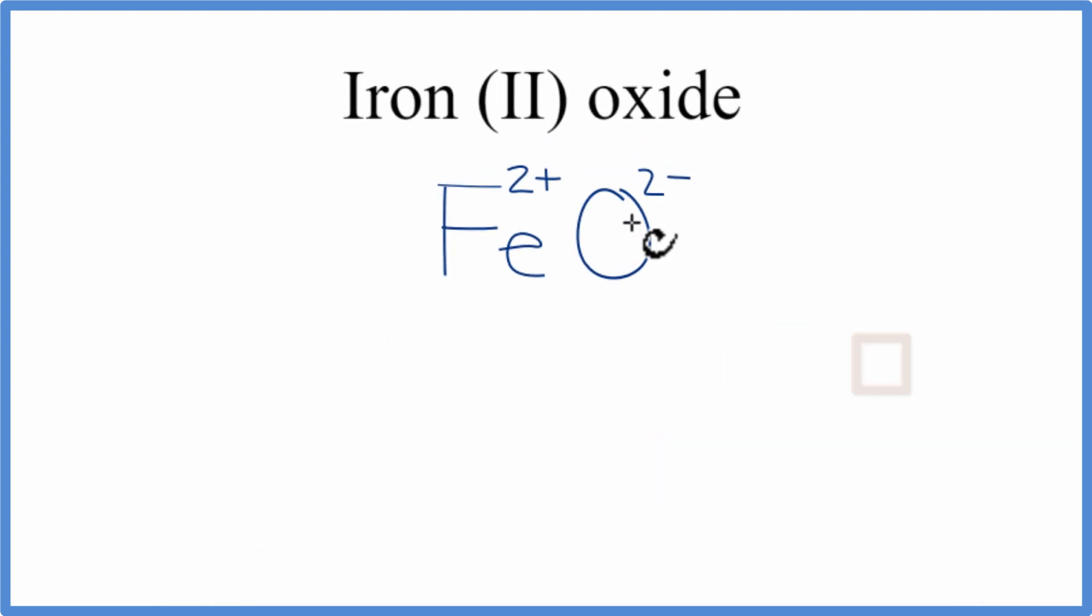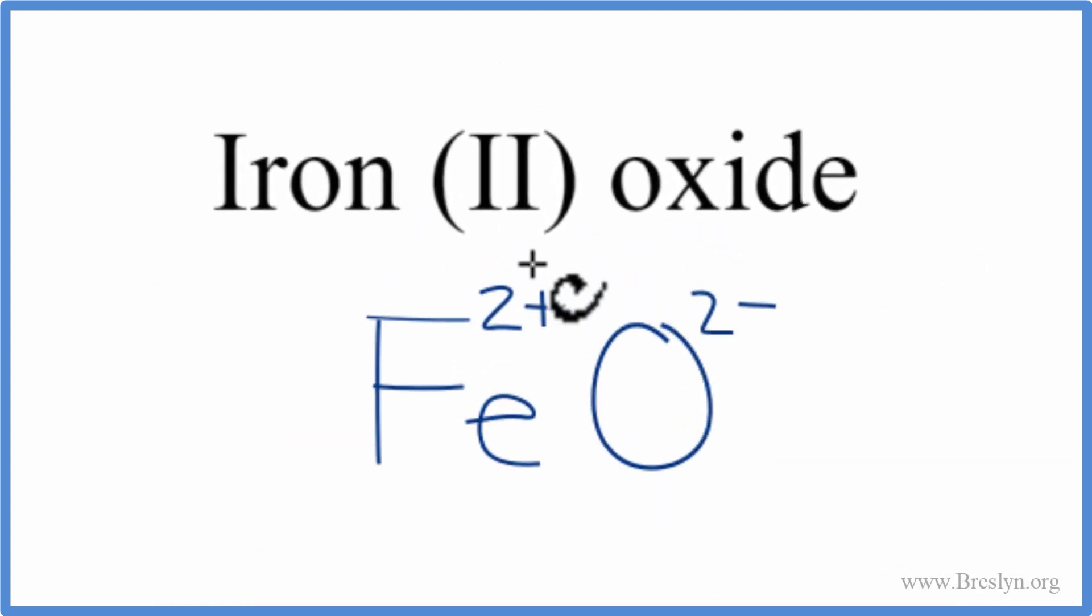So these charges, they need to add up to zero to have a neutral compound, and iron (II) oxide, that's a neutral compound. 2 plus and 2 minus, that adds up to zero, it gives us a net charge of zero.